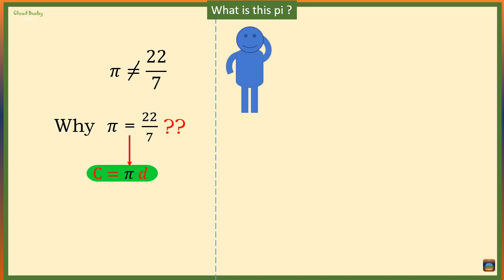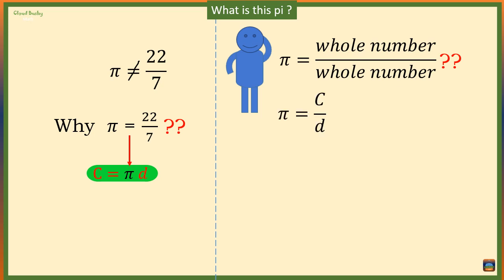One of the reasons why we take pi to be 22 over 7 is that pi cannot be expressed as a simple fraction. In fact, the ratio C over d is equal to 3.1415926535897932... and it goes on and on and cannot be expressed as a simple fraction.